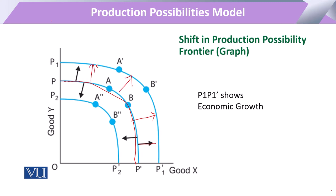This outward shifting is possible through the increase in the resources of production. In other words, our available production capacity increases when these resources of production increase.